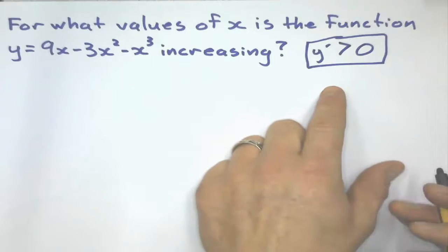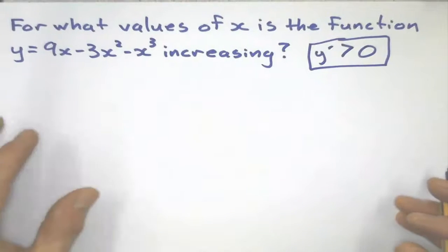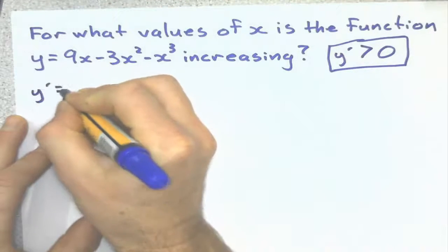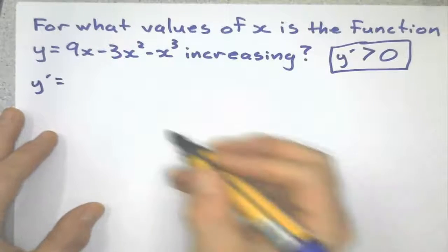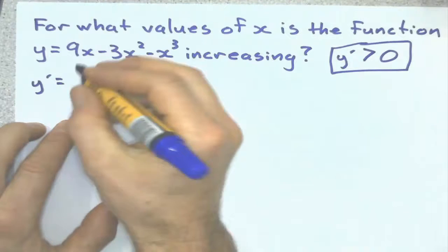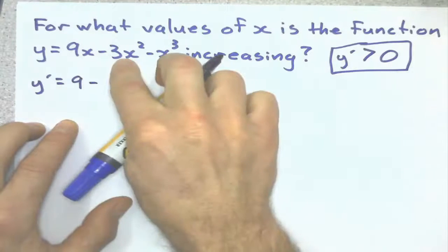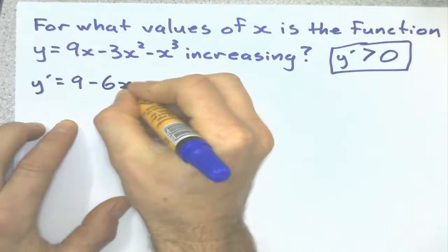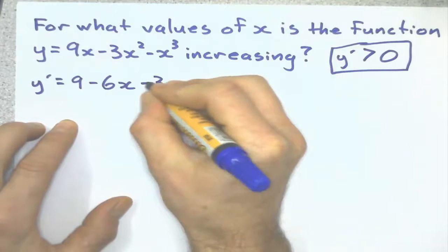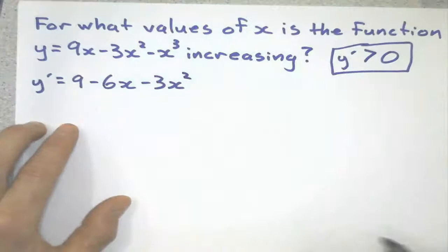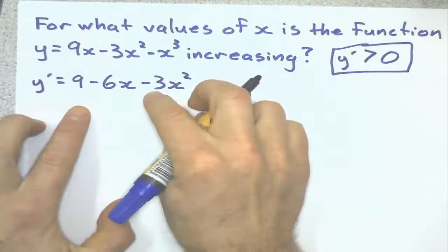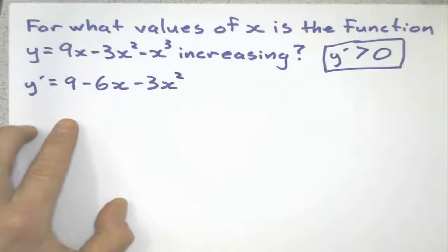Before I do any sketches of cubics, let's just start differentiating this. Let's start doing the calculus. I'll just differentiate each term. This one differentiates to 9, this one to minus 6x, and this one to minus 3x squared. And if it's increasing, this should be greater than zero.